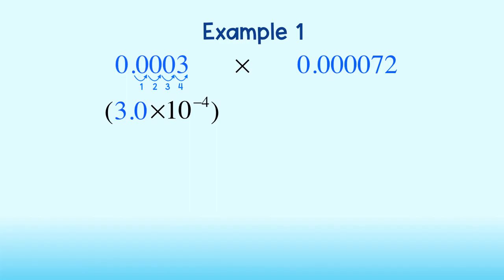Since our original number is less than 1, our power is negative. So we have 3 times 10 to the negative 4th on the left, times 7.2 times 10 to the negative 5th on the right.